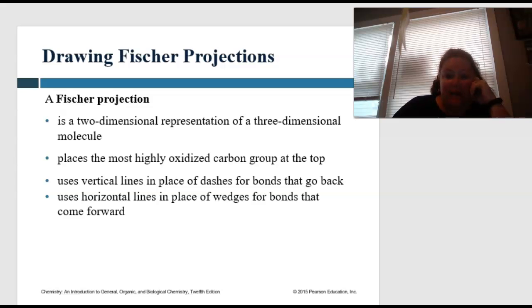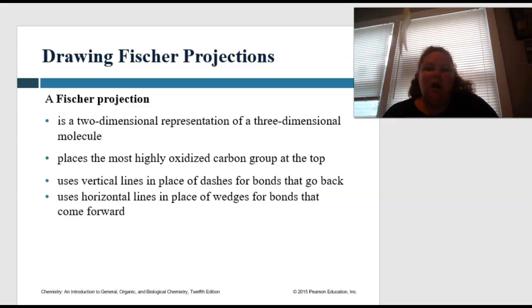Okay, so let's apply this. We're going to learn how to apply this by drawing Fischer projections. A Fischer projection is a two-dimensional representation of a three-dimensional molecule. This places the most highly oxidized carbon group at the top. This uses vertical lines in place of dashes for bonds that go back, and it uses horizontal lines in place of wedges for bonds that go forward.